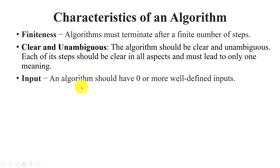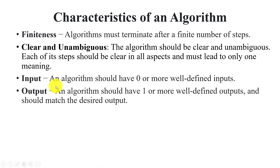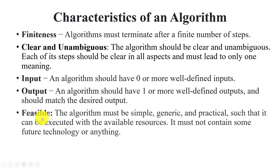The third characteristic is input — we have to provide input to the algorithm, and it may be zero or more; the algorithm must accept well-defined input. Next is output — the algorithm should have one or more well-defined outputs, which should be the correct desired output. And feasibility — the algorithm must be feasible, meaning it must be simple, generic, practical, and each step must be clear and understandable. It executes within available resources and must not depend on future technology.